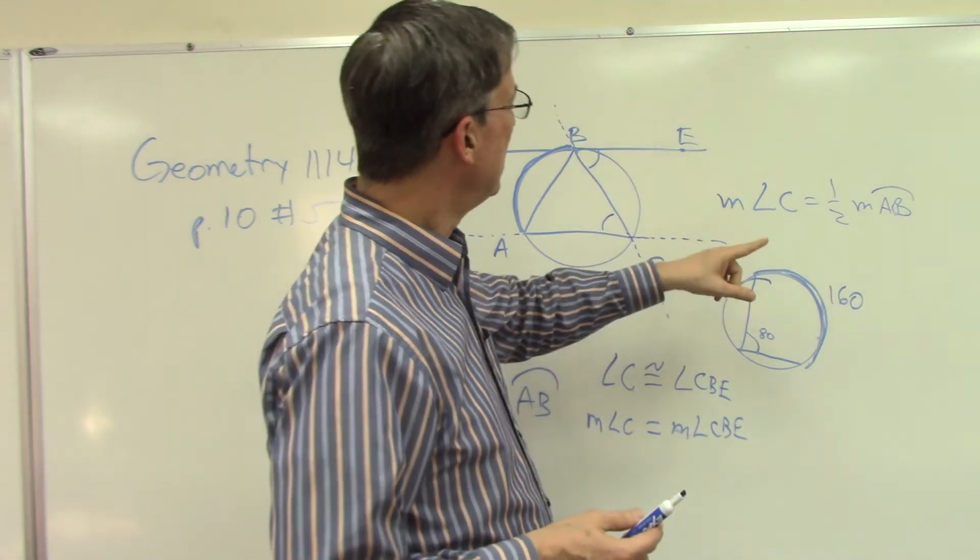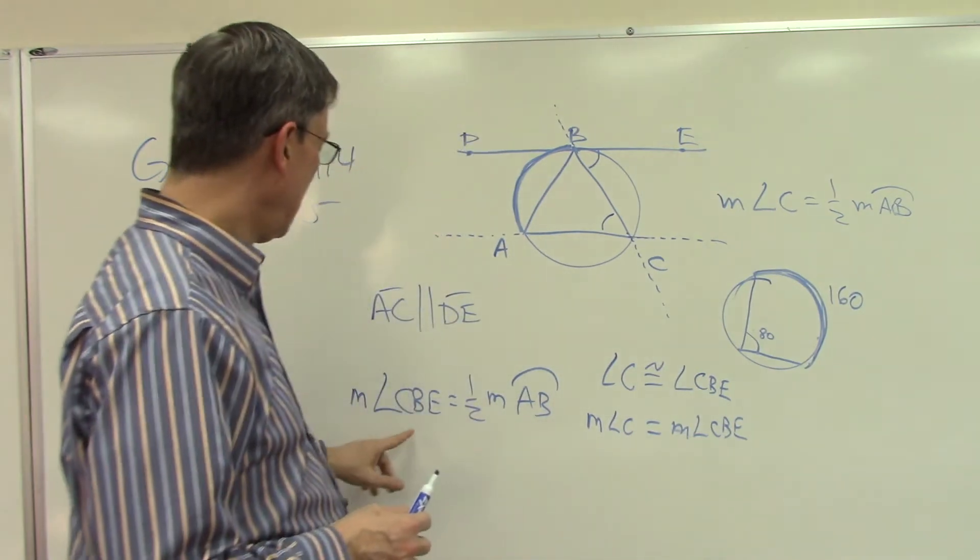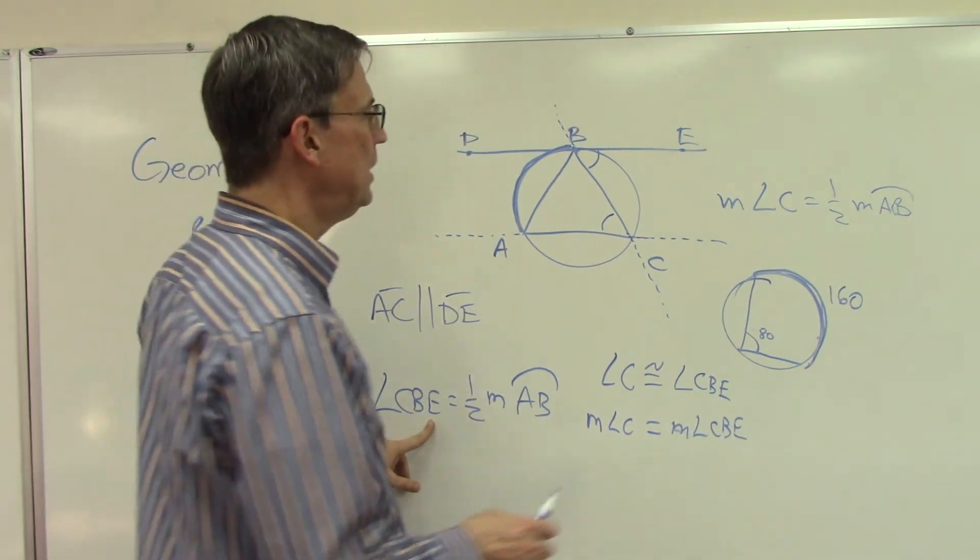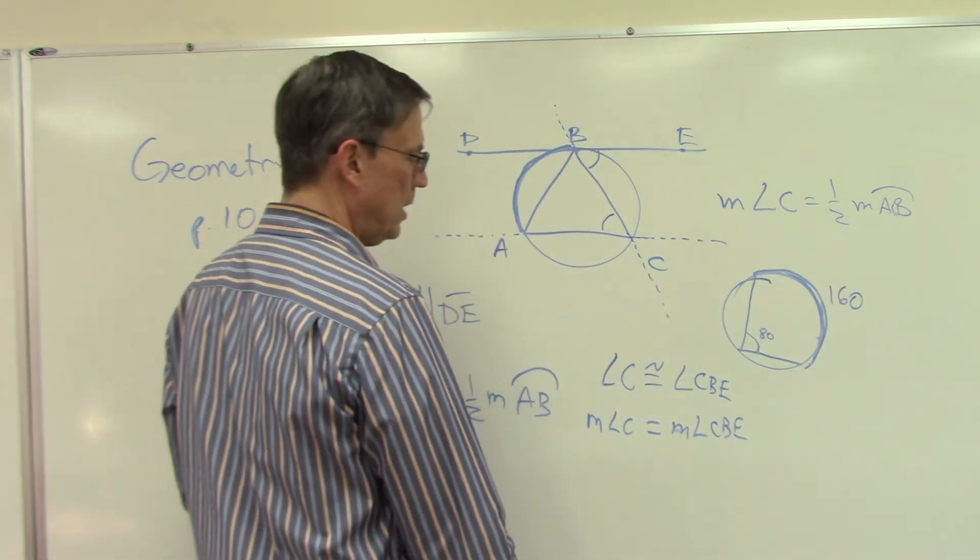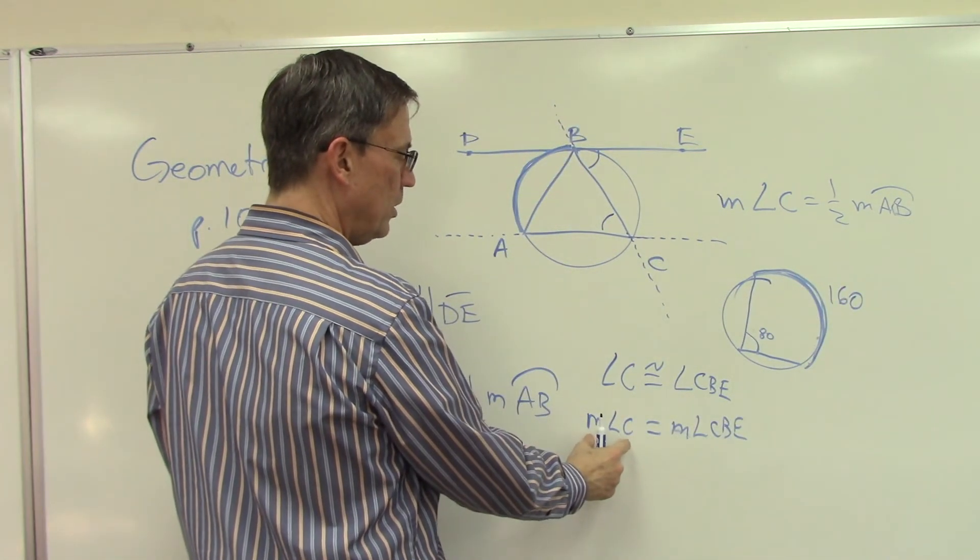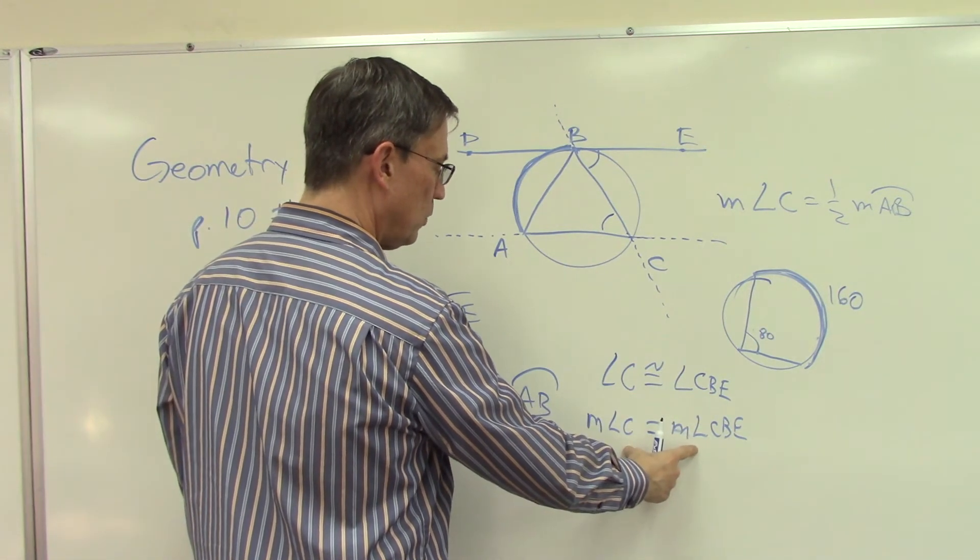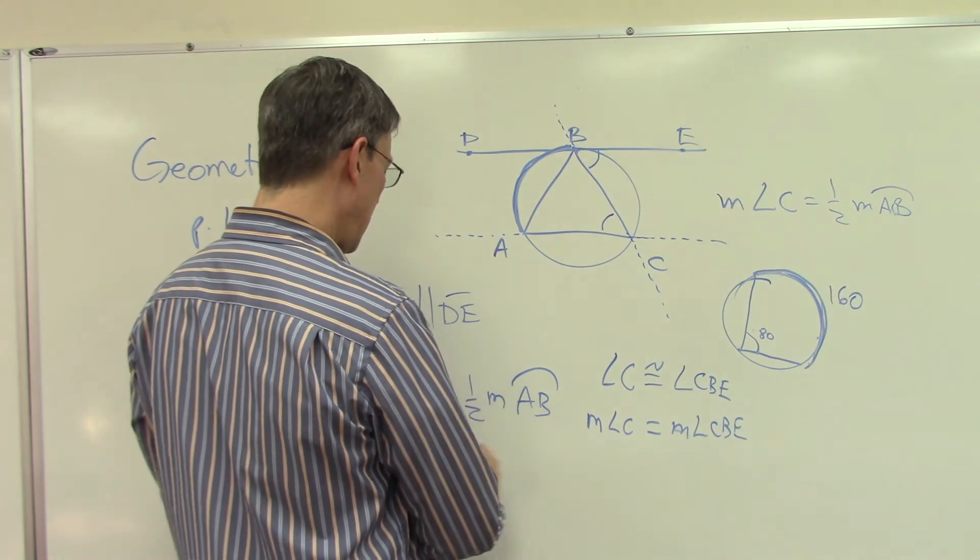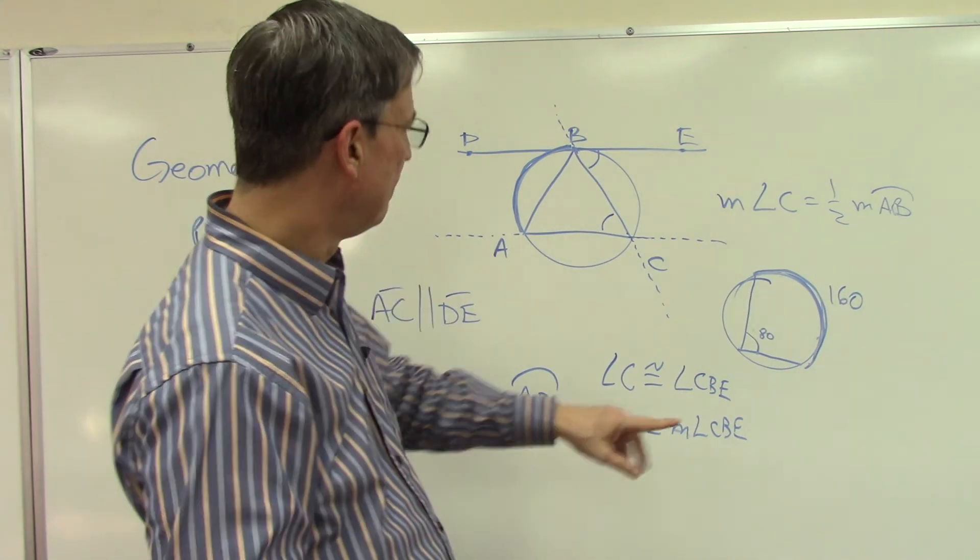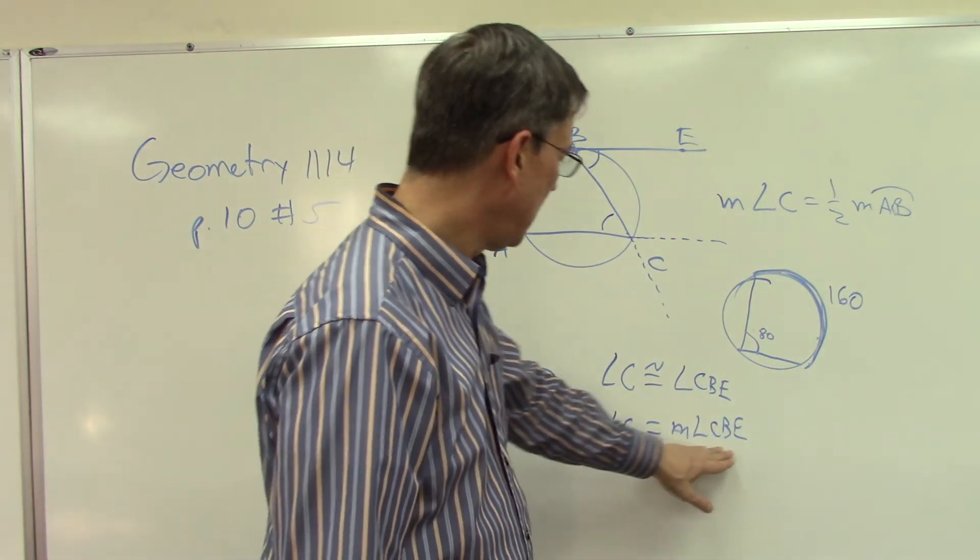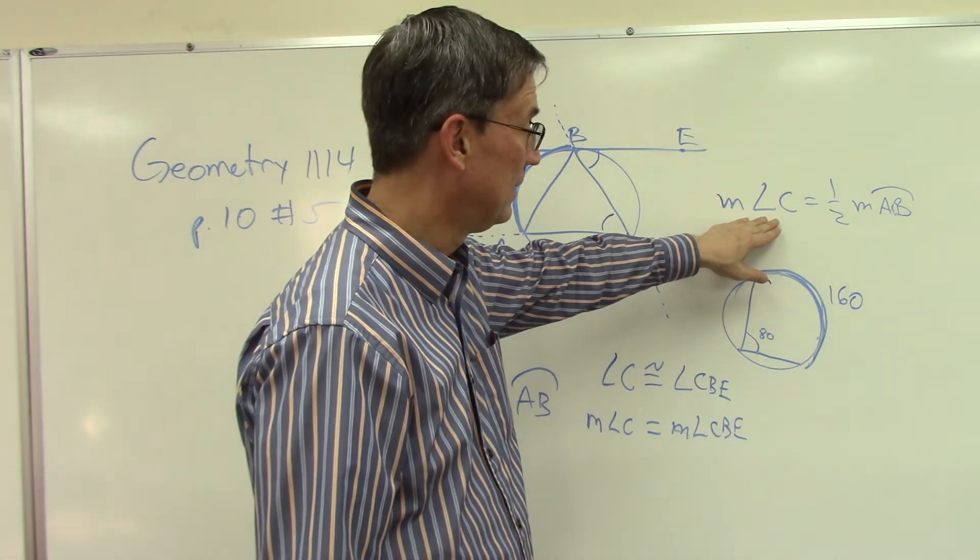And then, once we have this, we're really close to what we're trying to prove, and that is that the measure of CBE is also equal to this. Okay? So we have here, we made this statement that these two angles are congruent, therefore they're equal, and then I can substitute this angle, CBE, in place of measure of angle C, okay?